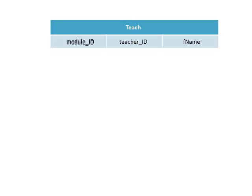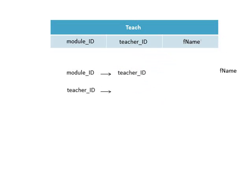Let's say we have a relation 'teach' with the attributes module ID, teacher ID, and fname. Module ID functionally determines teacher ID, and teacher ID functionally determines the teacher's first name with the attribute fname. So we have two functional dependencies in this example. Typically, we put curly braces around them and call them a set of functional dependencies F.